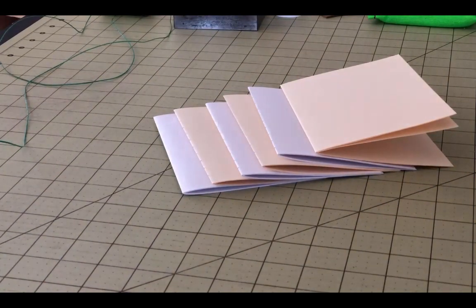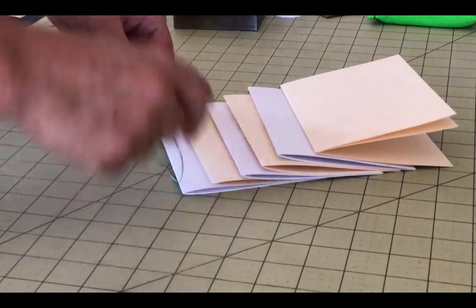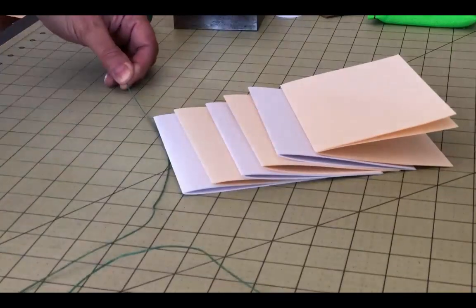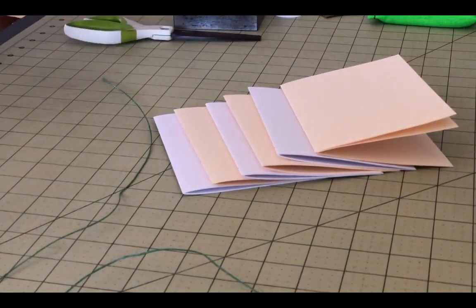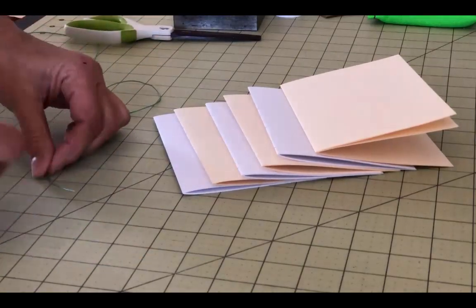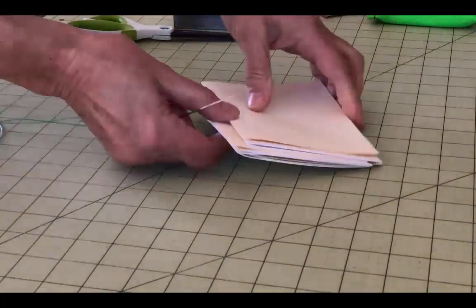Once you've punched them all, you'll want to start sewing. A general rule of thumb for how much thread you'll need is one length per signature plus extra for the beginning and ending tails. I'm always a little generous in this regard because I hate getting to the end only to find that I don't have quite enough thread, forcing me to add a piece to finish off the binding.